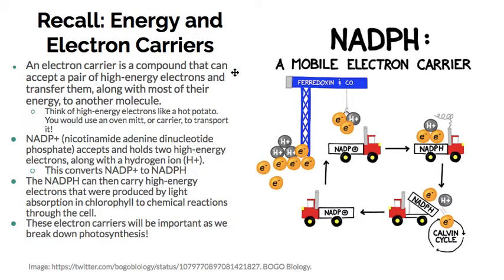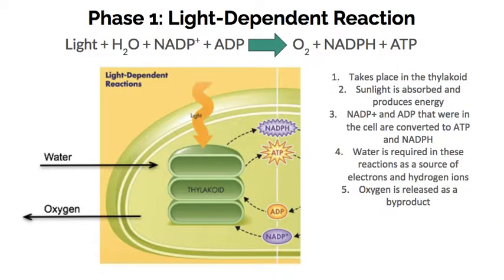So electron carriers are going to be important as we talk about cellular respiration. At the end of the day, they're just compounds that can accept a pair of high-energy electrons and transfer them along with most of their energy to another molecule. High-energy electrons are kind of like hot potatoes, and your electron carriers are like your oven mitt — things that can transport them.